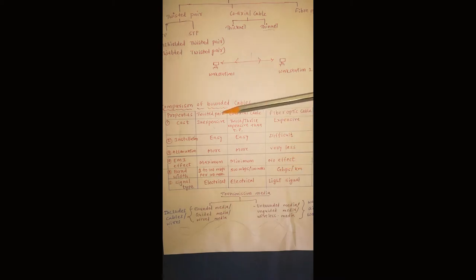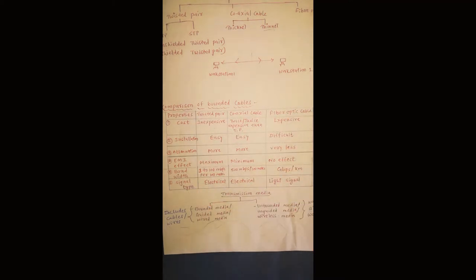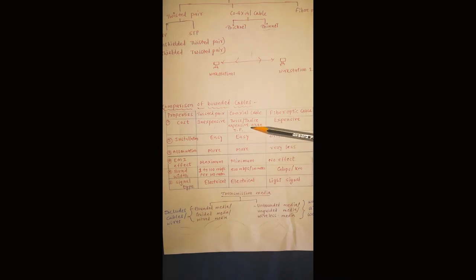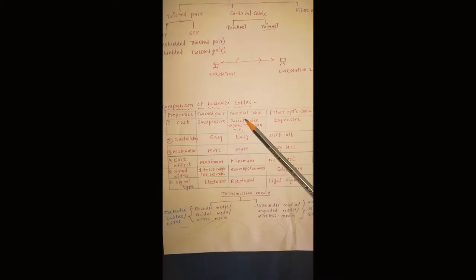From this chart we can compare any two or three cables in one place. These are the properties of transmission media, and here three cables are listed: twisted pair, coaxial cable, and fiber optic cable. The cost of twisted pair is inexpensive, whereas the cost of coaxial cable is twice or thrice more expensive than twisted pair. Fiber optic cable is very expensive — much more than twisted pair and coaxial cable. Installing twisted pair is very easy.